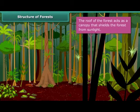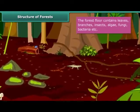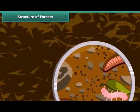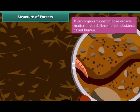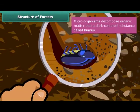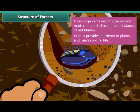The forest floor is hot and humid. It contains leaves, branches, insects, algae and microorganisms like fungi, bacteria, etc. that are invisible to the naked eye. Microorganisms decompose organic matter into a dark colored substance called humus. Humus provides nutrients to plants and makes the soil fertile.